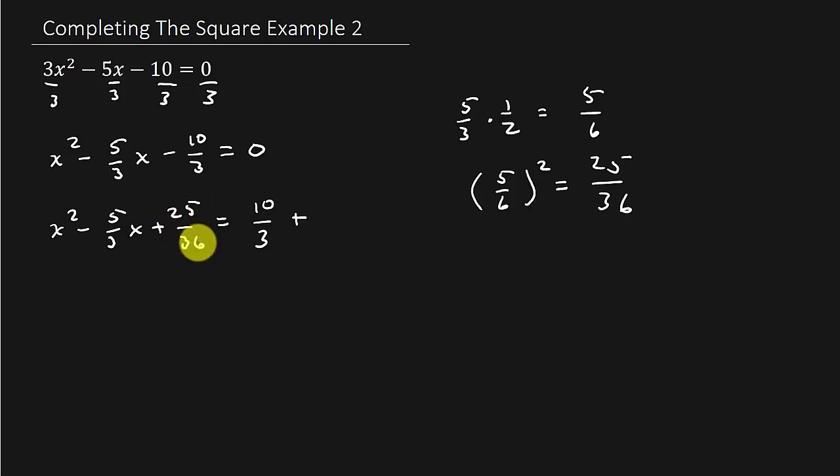Since we added 25 over 36 to the left-hand side, we've got to add 25 over 36 to the right-hand side.